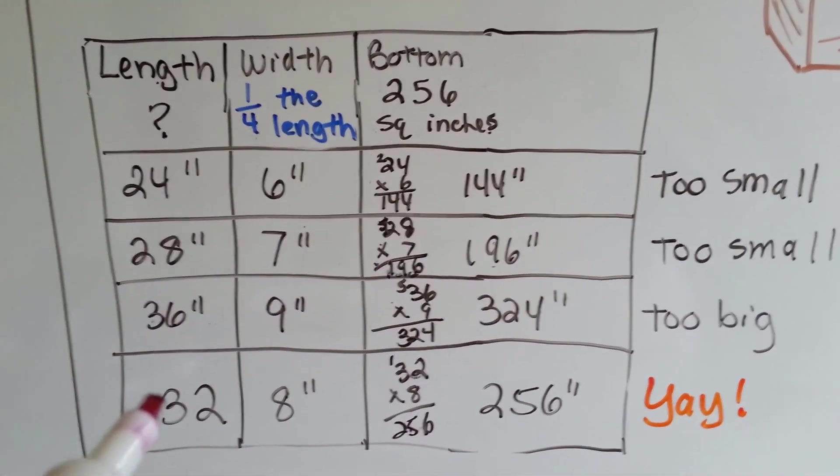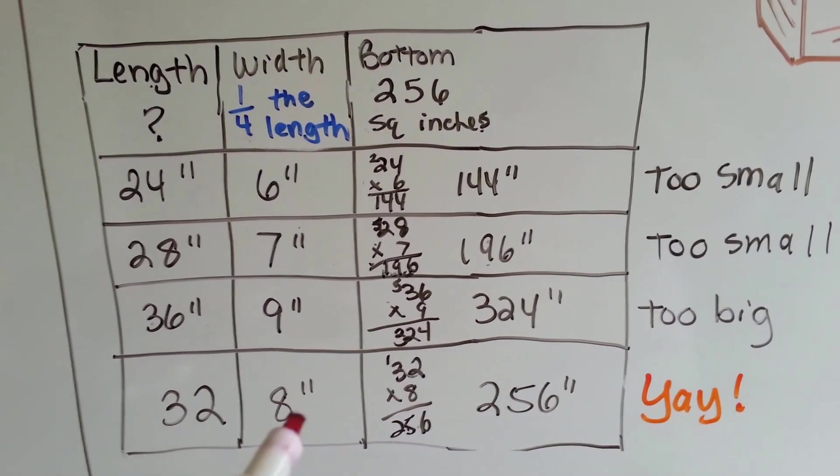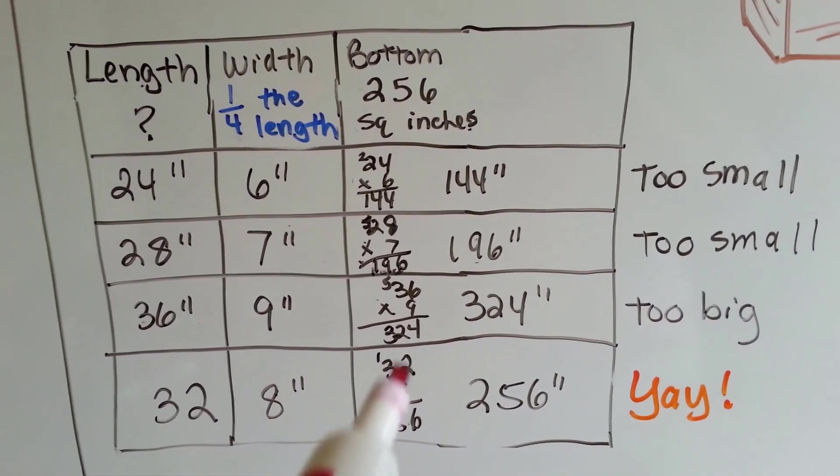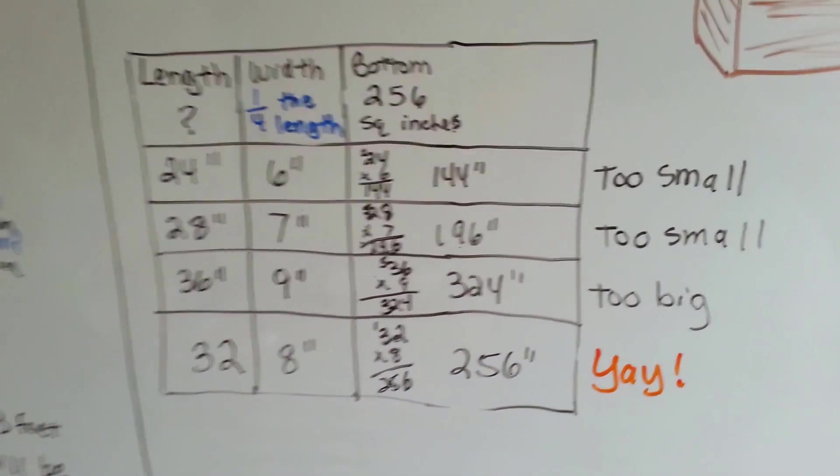So I tried thirty-two. I went down, because that was too big. I went down to thirty-two. Eight times four is thirty-two. And when I multiplied them, it was perfect. It was two hundred and fifty-six. So it worked.